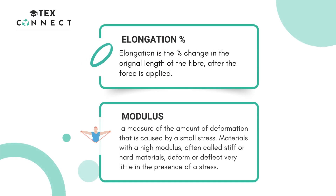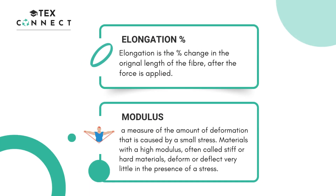Elongation is the percentage change in the original length of the fiber after a force is applied. Modulus is the measure of the amount of deformation caused by stress — meaning materials with high modulus are stiff and hard, and they deform or deflect very little under stress.